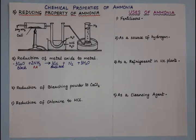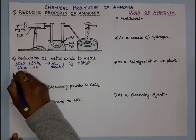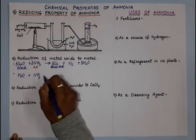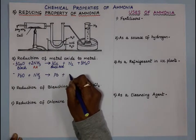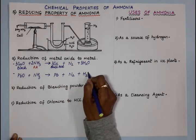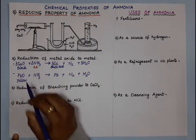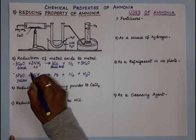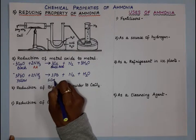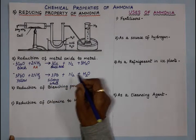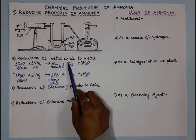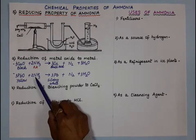In all these reactions, ammonia is acting as a reducing agent. The next reaction is PbO: when heated with ammonia, we get Pb (lead), nitrogen, and water vapor. PbO is yellow in color, also called yellow litharge. It is not taken in a combustion tube because it fuses with glass and is difficult to remove, so it is taken in a porcelain disc. We get silvery white metal lead, along with nitrogen and water vapor.